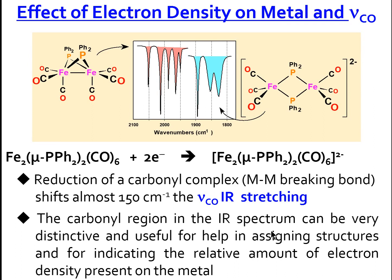The carbonyl region in the infrared spectrum can be very useful for assigning structures and for indicating the relative amount of electron density present on a metal. Regarding whether there is a relation between the number of CO ligands and the number of bands: if the structure is highly symmetrical, we can assign the number of CO ligands as equal to the number of bands obtained. But in general, due to deformations and motions in the complexes, we do not obtain the same number, so this is not a general rule.